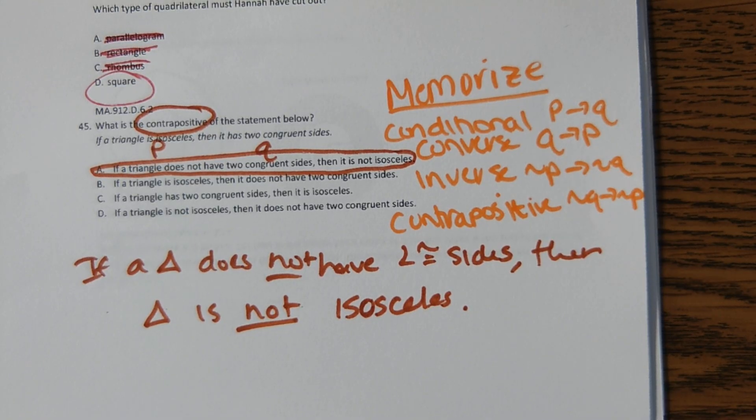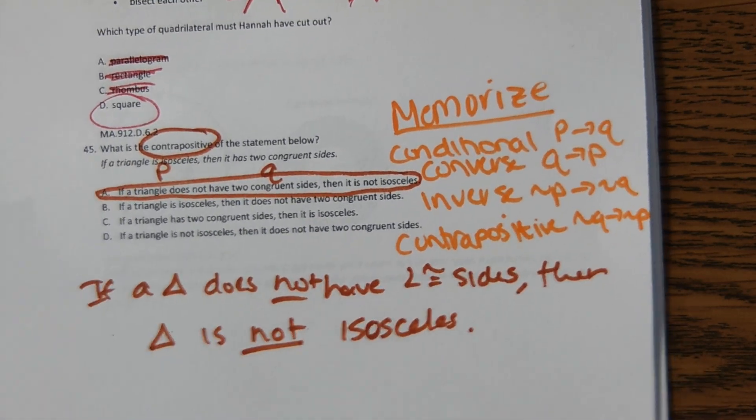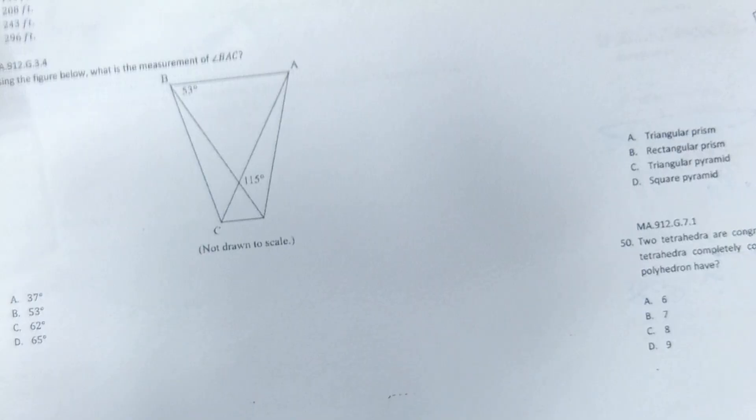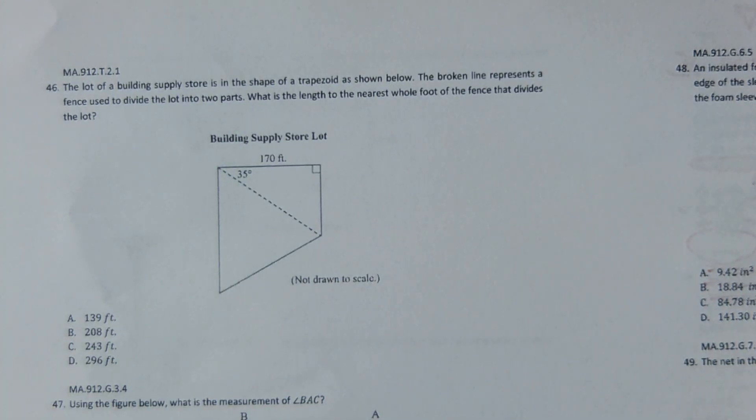So the EOC is like 30% or 33% of your overall grade. But if you fail the EOC, you don't necessarily fail the whole year. Only if your grades like low. But honestly, you probably won't fail it. You've been working too hard to fail it. There's no way. Unless you just like give up on yourself.